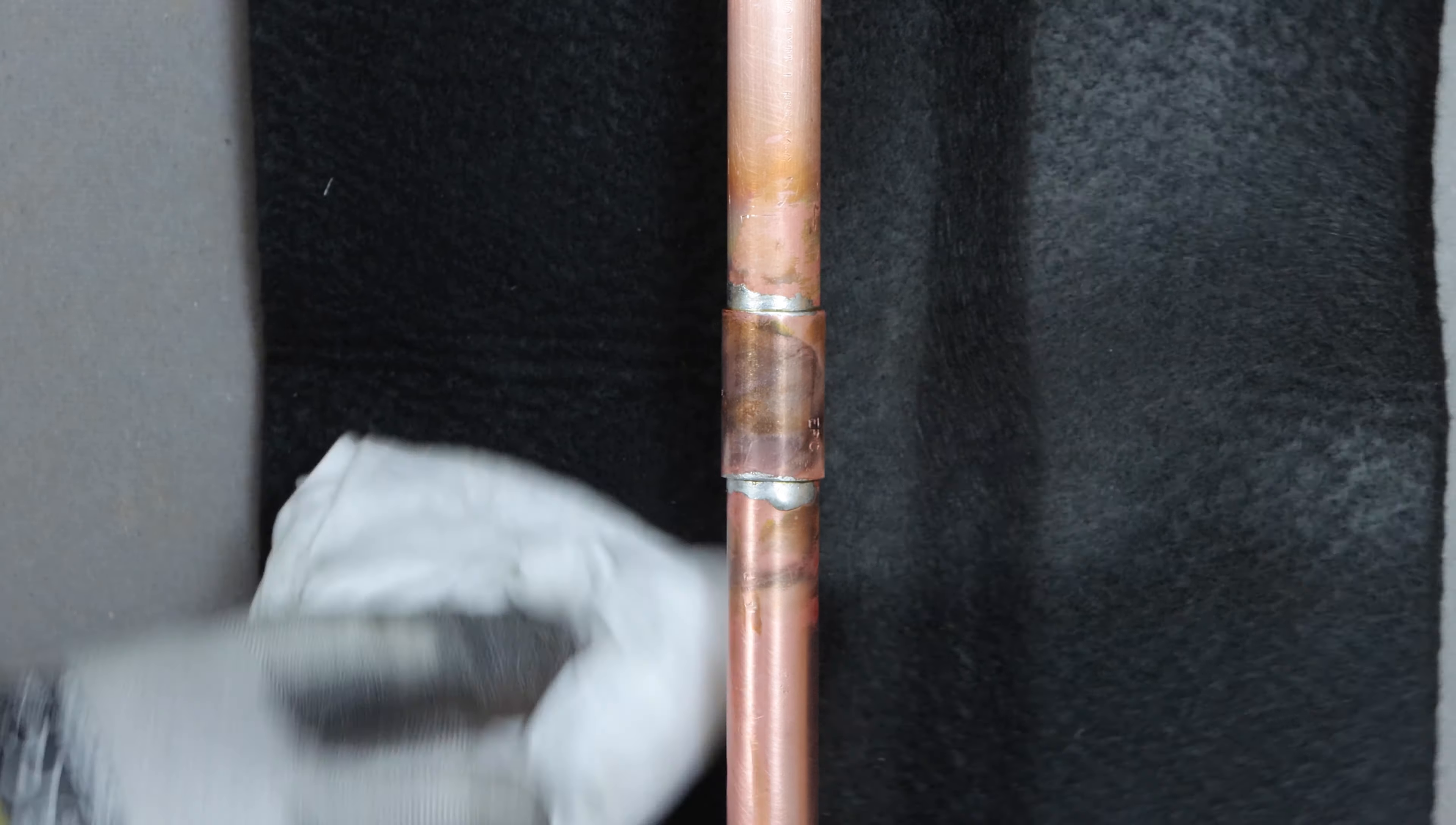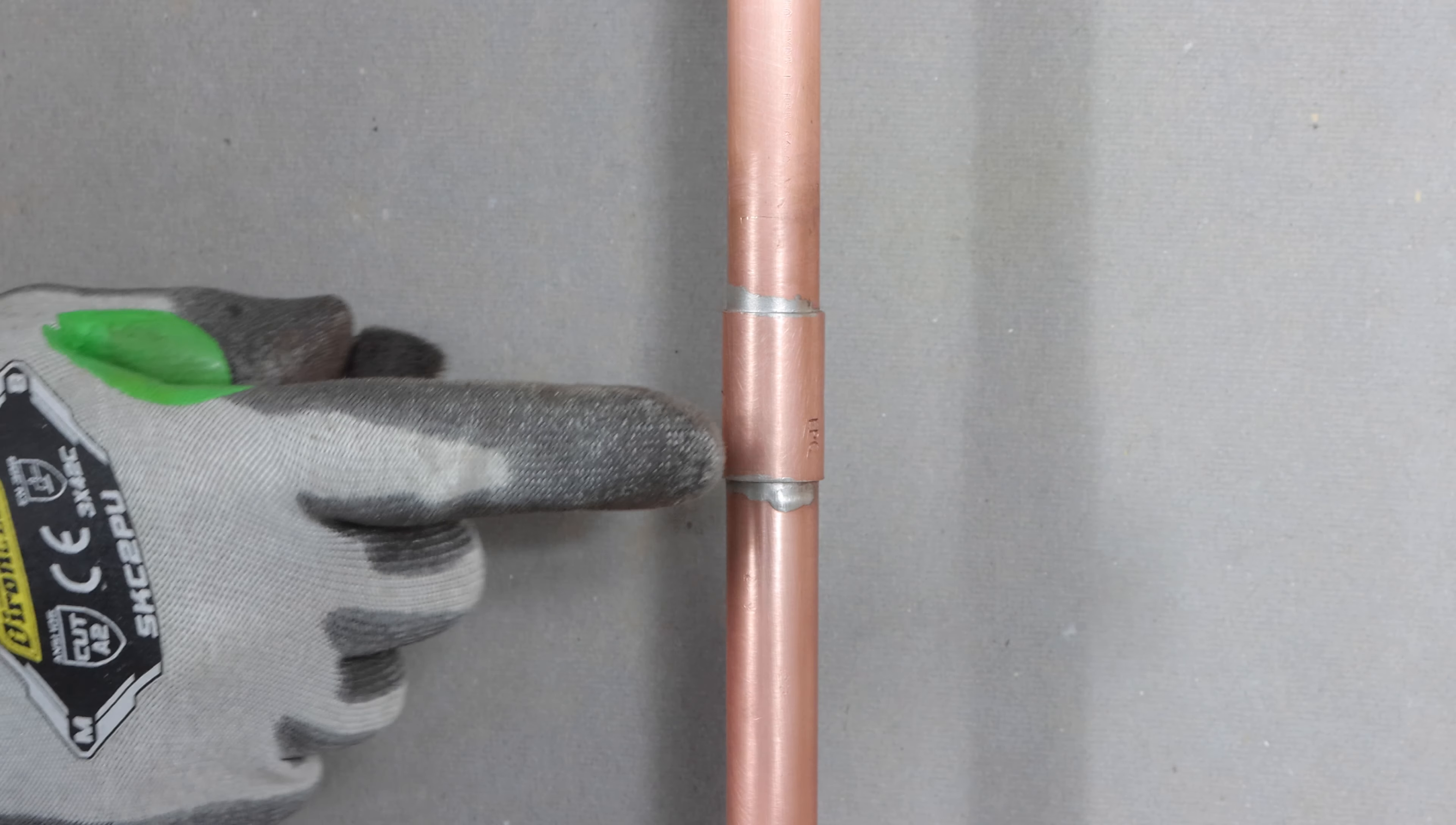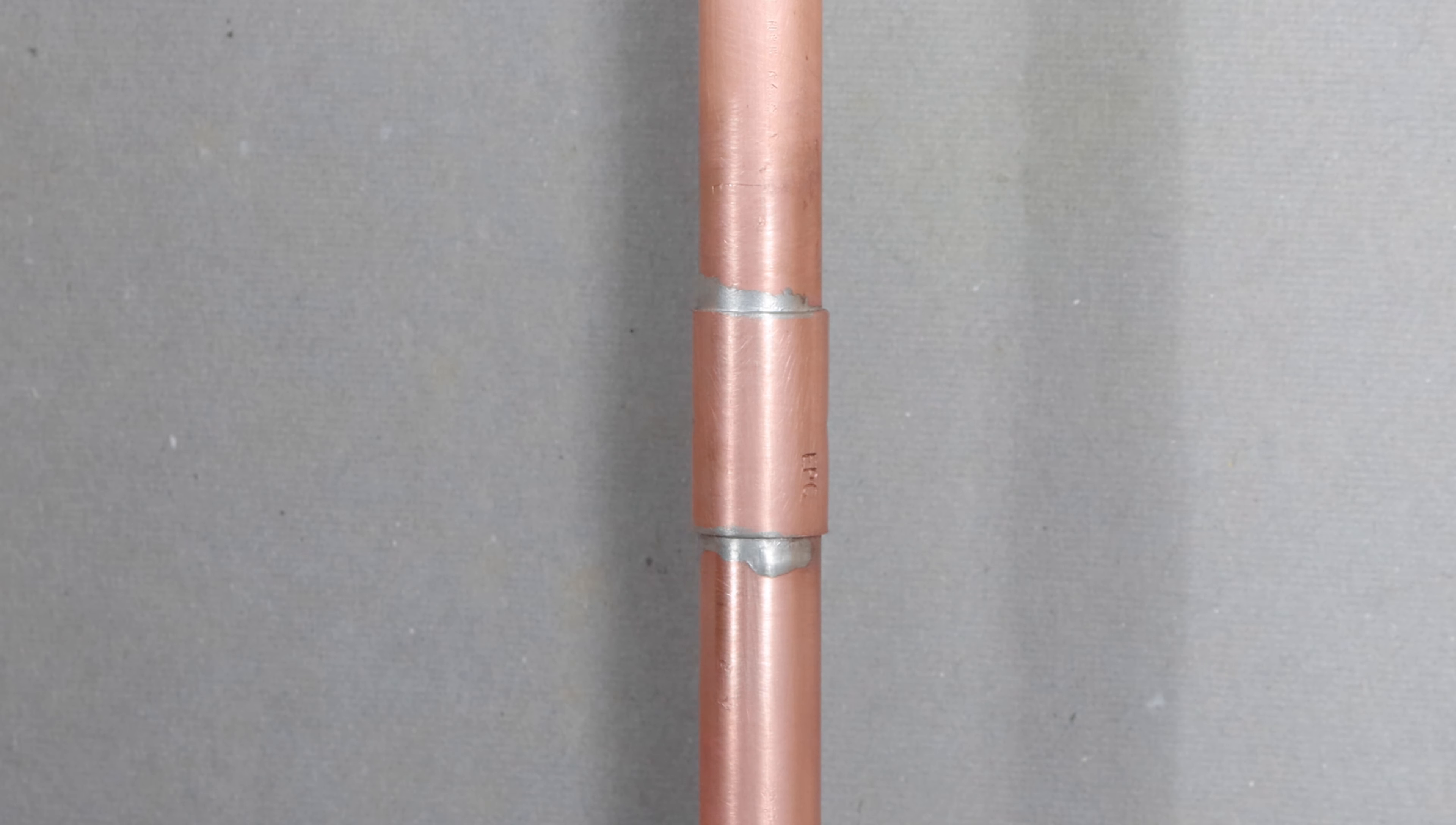Then remove all the excess flux that remains on the pipe, and you can even clean that up a little bit using the nylon grit pad. These tips help you solder vertical copper pipes and get great results. If you like the tips, give this video a thumbs up, and make sure you subscribe for future tutorials.